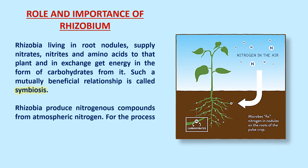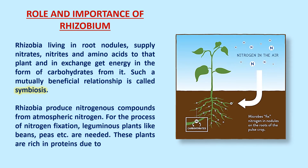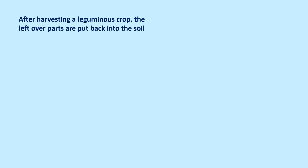Rhizobia produce nitrogenous compounds from atmospheric nitrogen through the process of nitrogen fixation, for which leguminous plants like beans and peas are needed. These plants are very rich in proteins because of the nitrogenous compounds made by rhizobia. After harvesting a leguminous crop, the leftover parts are put back into the soil to maintain the bacterial population in the root nodules.